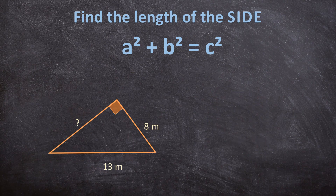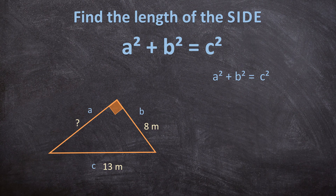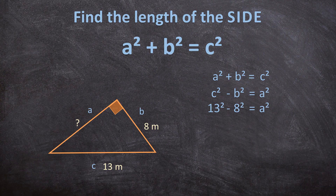Let's do this example together. Before we start, let's name our sides: A, B, and C. We want to calculate A. Writing our formula: A² plus B² equals C². We're not calculating C — we want A — so it's C² minus B², which gives us A². Filling in: 13² minus 8² equals A². 13² is 169 minus 8² is 64, equals A².